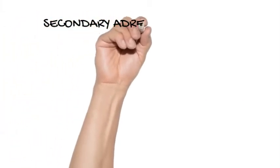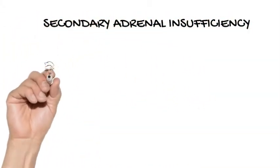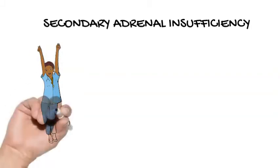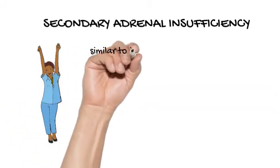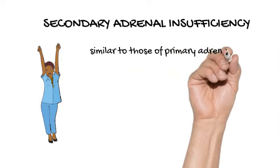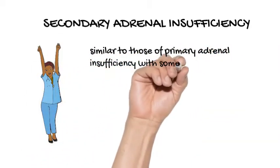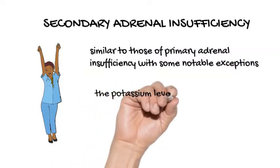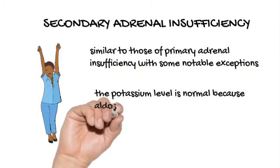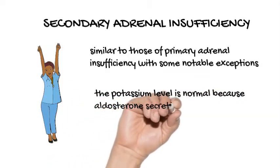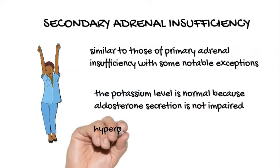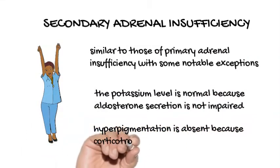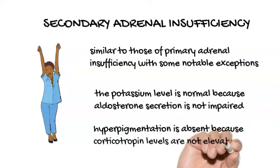Secondary adrenal insufficiency. Clinical features of secondary adrenal insufficiency are similar to those of primary adrenal insufficiency with some notable exceptions. Both can produce fatigue, anorexia, weight loss, nausea, vomiting, weakness, headache, abdominal pain, orthostatic hypotension, low-grade fever, hyponatremia, and eosinophilia. However, in secondary adrenal insufficiency, the potassium level is normal because aldosterone secretion is not impaired. In addition, hypopigmentation is absent because corticotropin levels are not elevated.